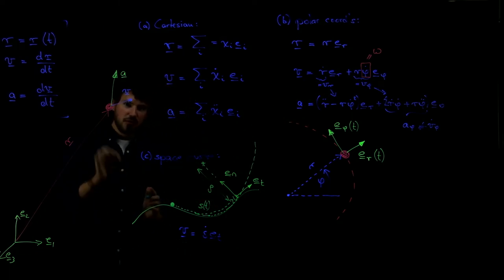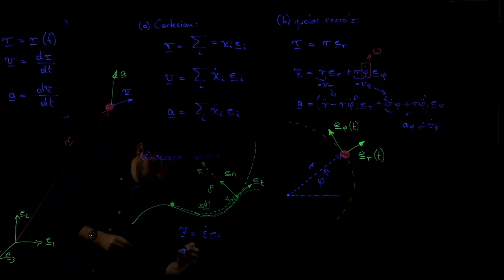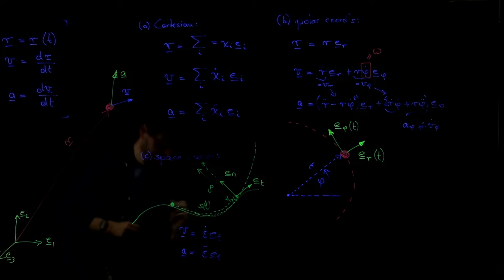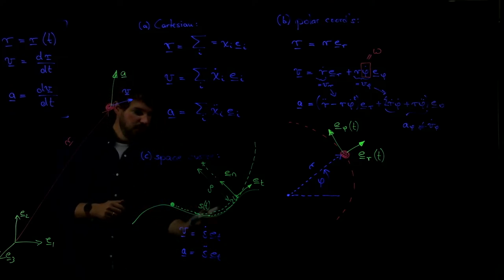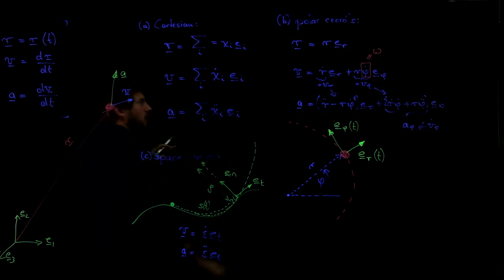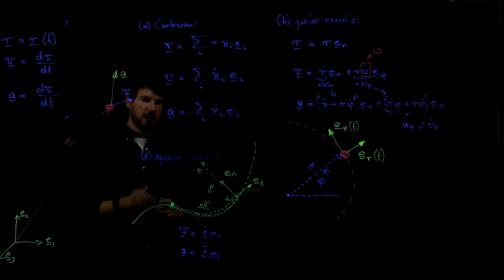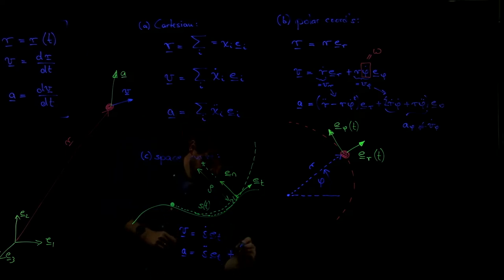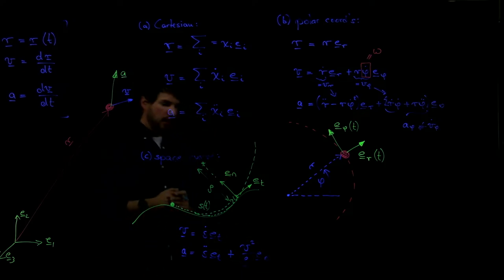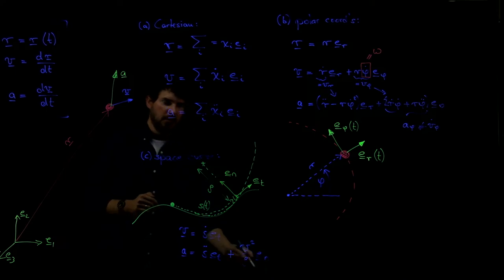And when it comes to the acceleration, and that's the one we will need a lot starting next week, we've seen that it has two components. It has s double dot times et. This is the acceleration along the path. So if you're driving your car and you're accelerating, you're accelerating in the direction of the path. And that's exactly this term over here. There's a second component, and that's essential.